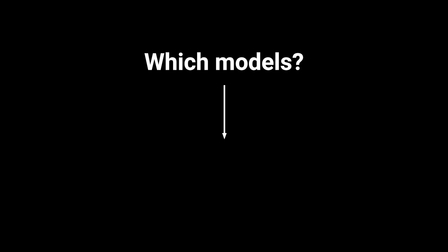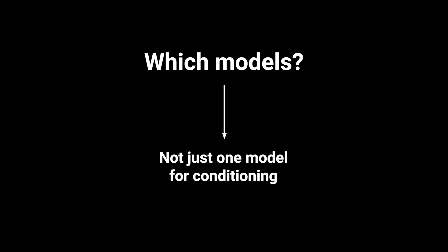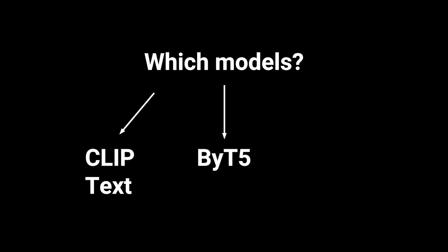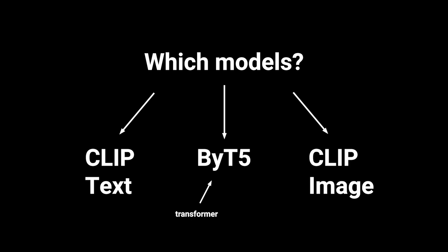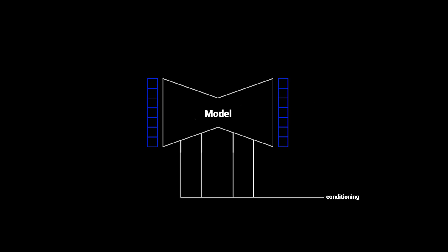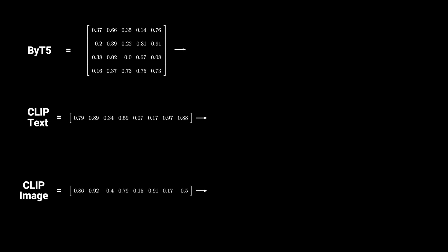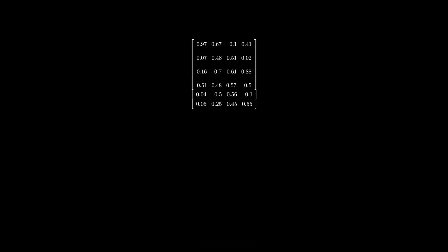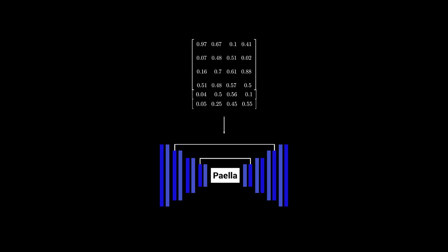Let's talk about what models we use to condition Paella. We are not only using one model — we condition Paella on ByteT5, CLIP Text Embeddings, and CLIP Image Embeddings. ByteT5 is a transformer, and so is the CLIP Text Encoder. We also get CLIP Image Embeddings from the training images, but we only condition the model on CLIP Text and Image Embeddings 5% of the time, as otherwise the model ignores the ByteT5 embeddings. We use cross-attention to inject the conditional information. Since we have three different conditionings with different dimensions, we project them all to the same dimension, concatenate them, and feed them to the model.